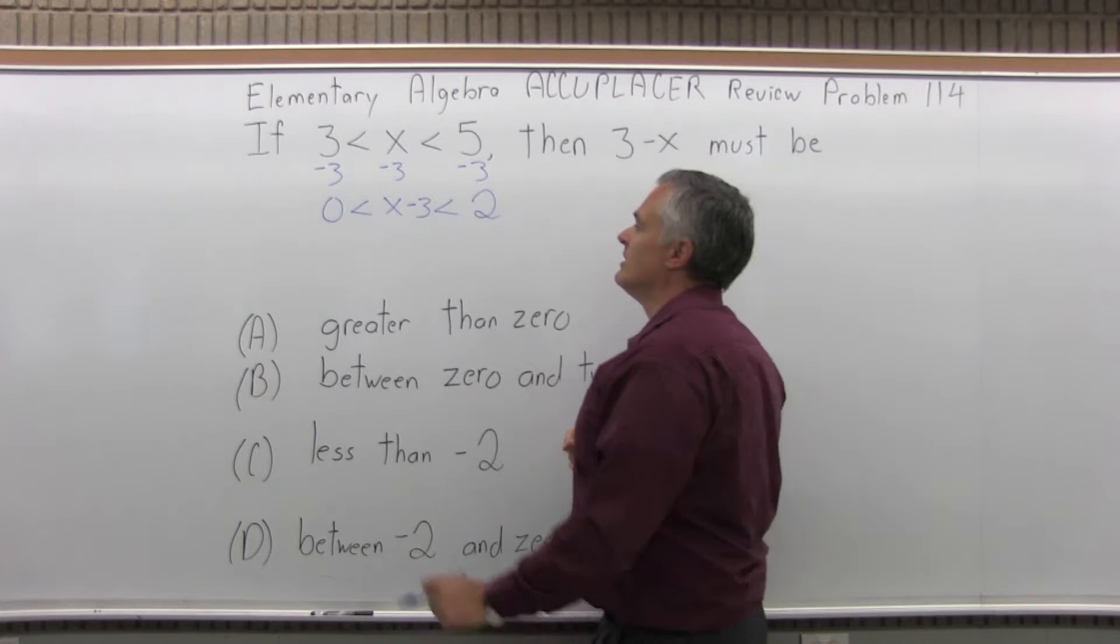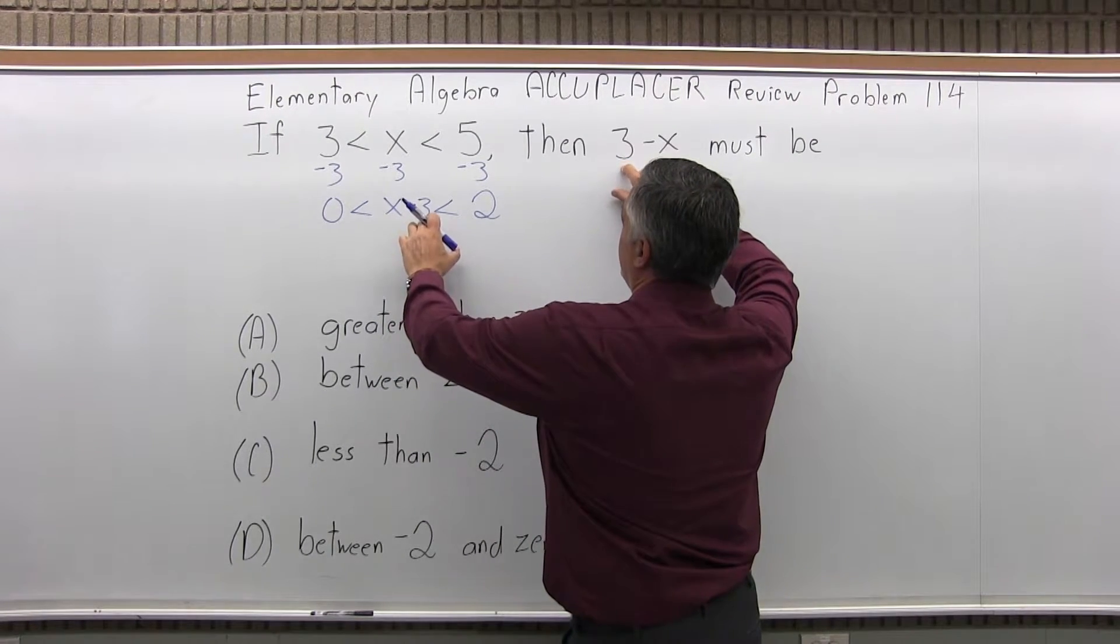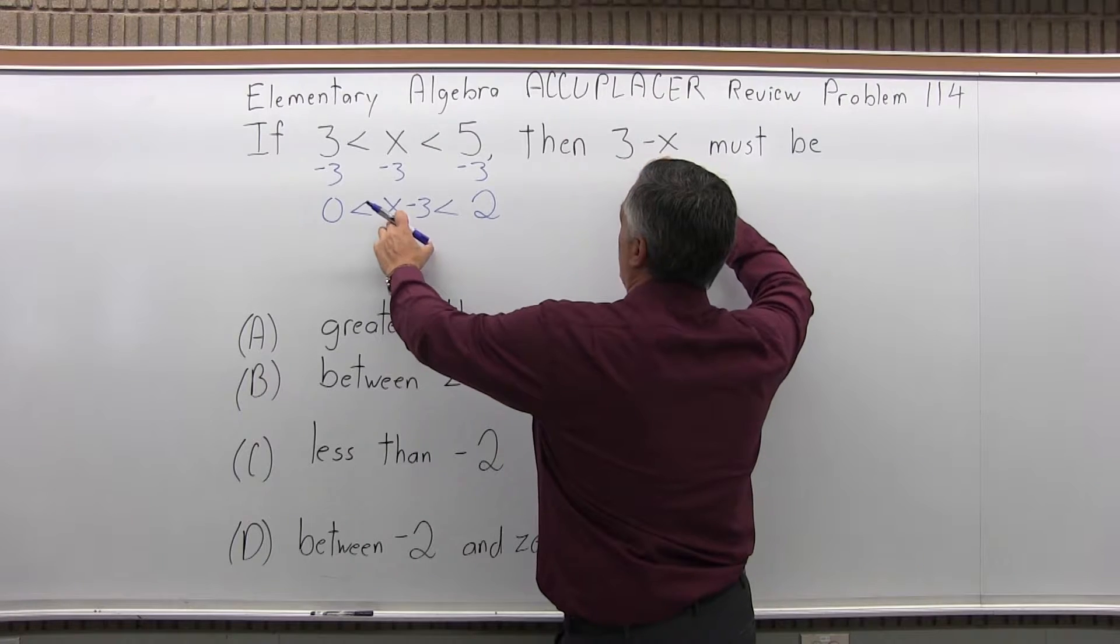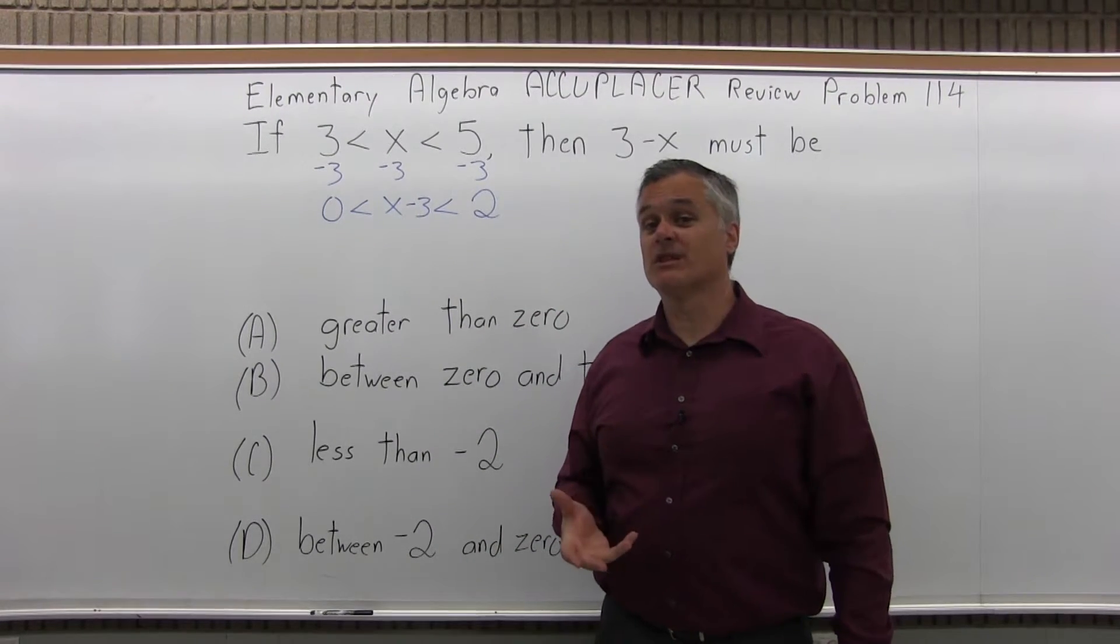So how do you just swap those? Well, you can't just swap them. The 3 becomes positive, it is negative, it becomes positive. The x was positive, I have to make it negative. So basically, what I need to do is multiply everything times negative 1.